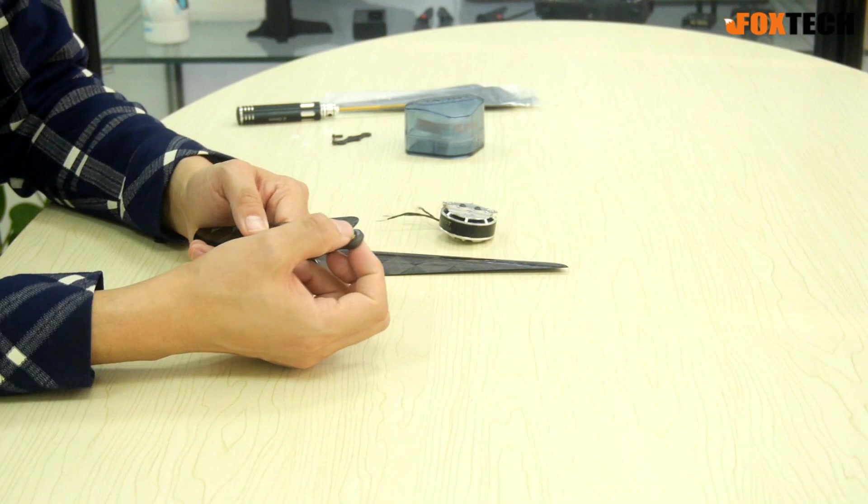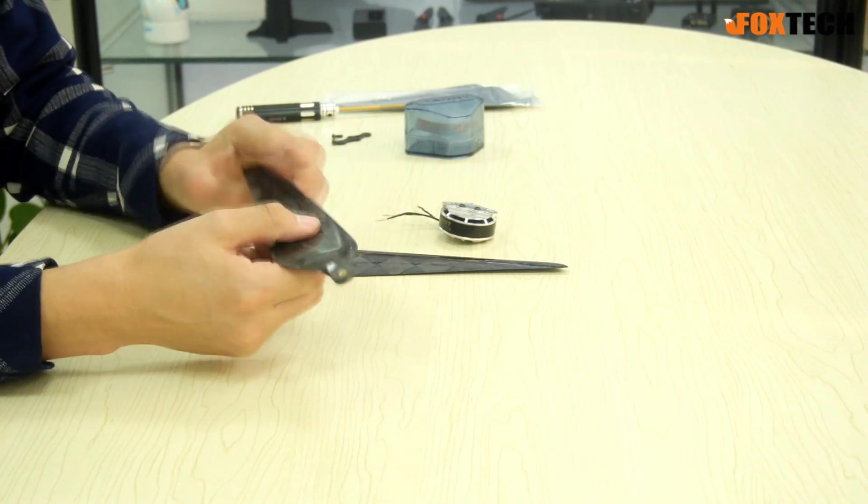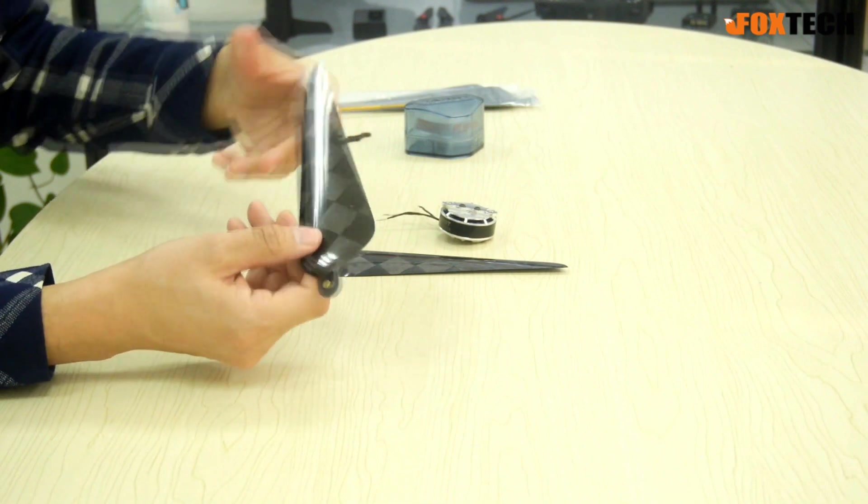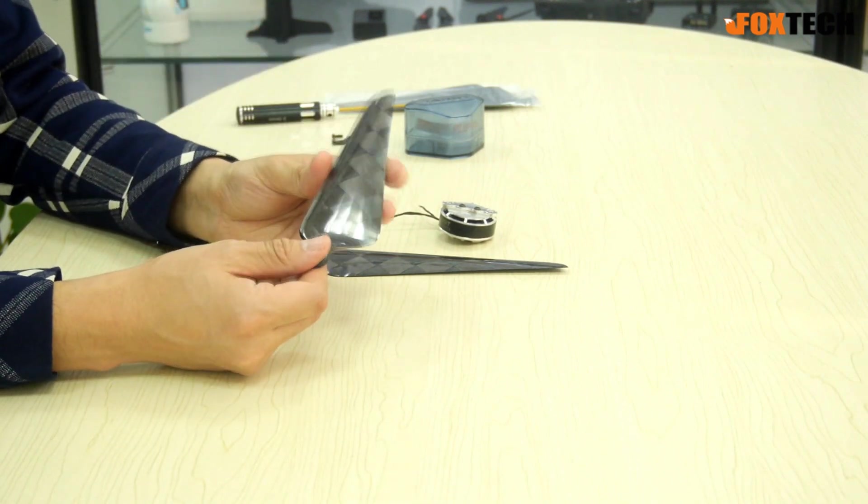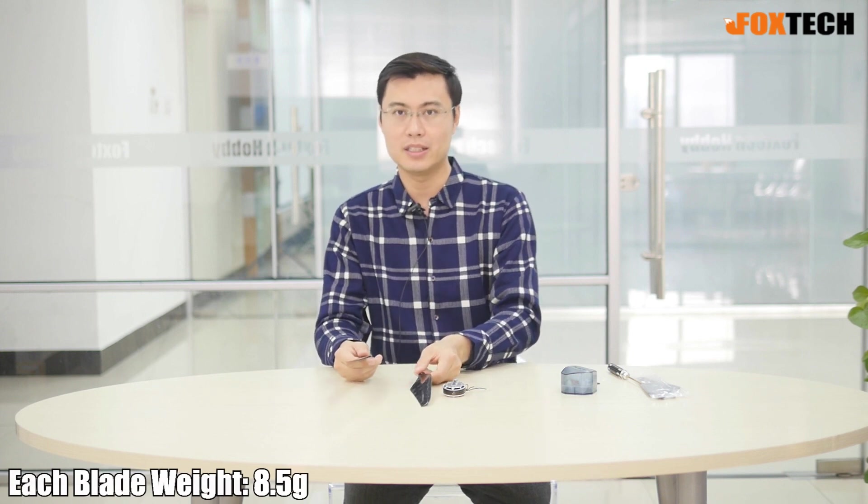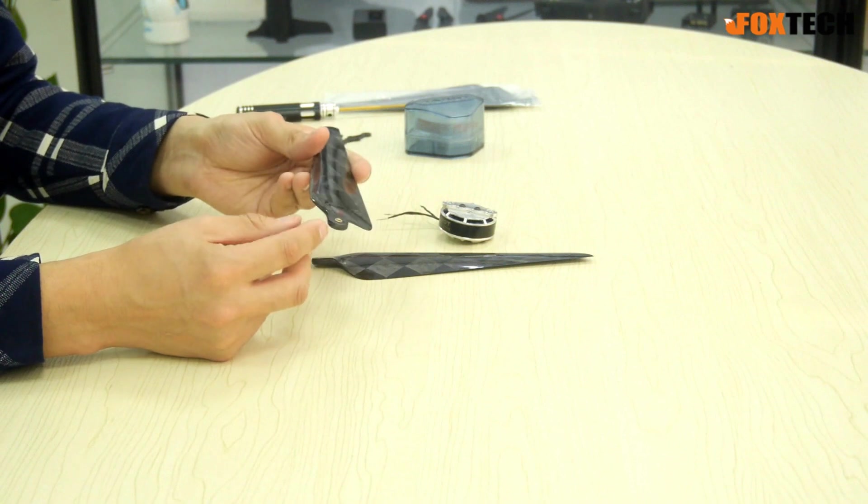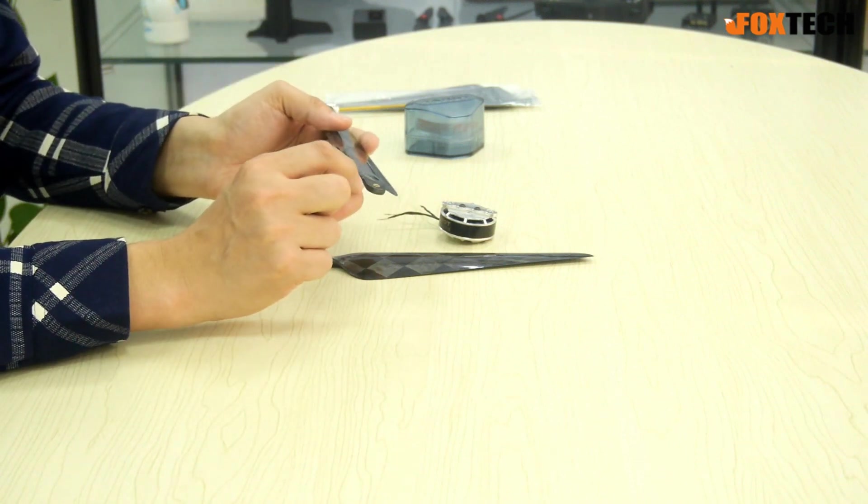Each propeller is made of full carbon fiber. It feels very strong but the whole propeller is very light. Each propeller only weighs 8.5 grams, so all together weighs around 17 grams. This is amazingly light. Each propeller comes with one copper adapter for the M3 screws.